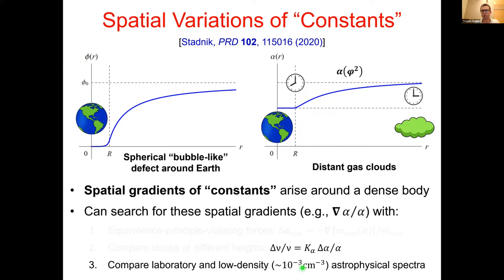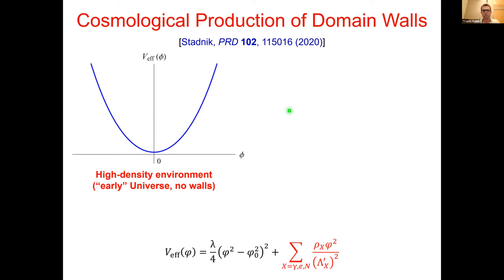These astrophysical gas clouds are very interesting because they have a very small density compared with even the best vacuum systems producible in the laboratory, and they are also of astronomical size. This combination of low density and large size is very useful for probing regions of parameter space that are practically inaccessible to purely laboratory measurements, due to the screening of the scalar field in dense environments.